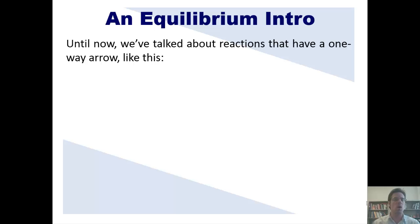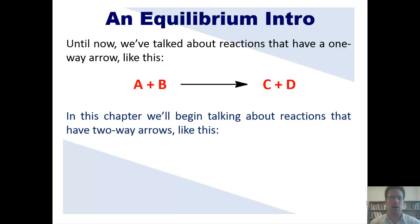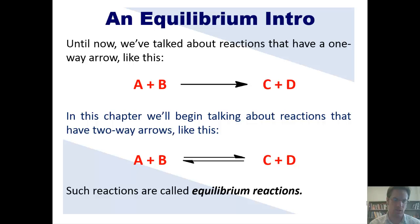Until now, we've talked about reactions that have a one-way arrow, such as this one, in which reactants A and B convert to products C and D. In this chapter, we'll begin talking about reactions that have two-way arrows, like this one. These types of reactions are called equilibrium reactions.